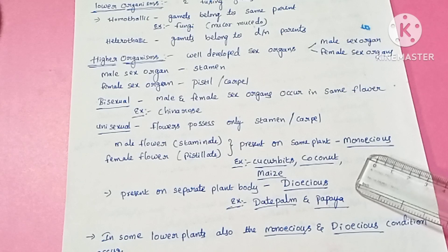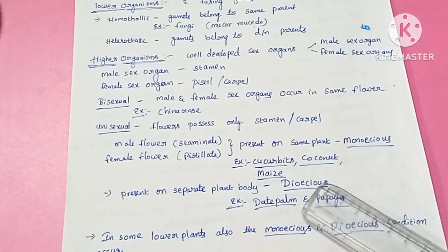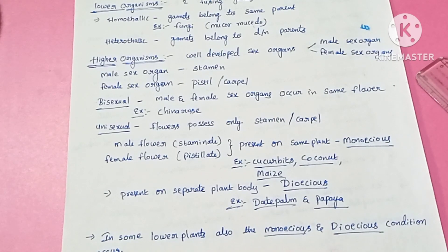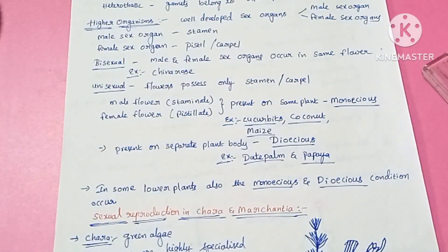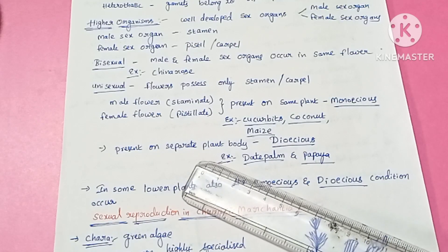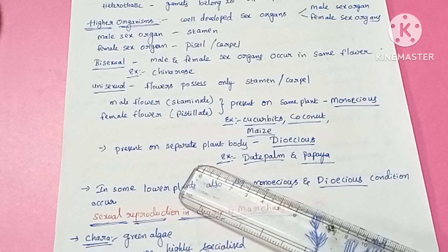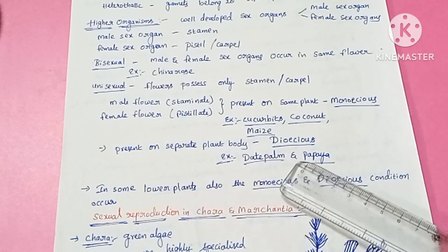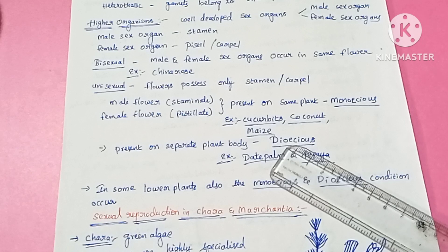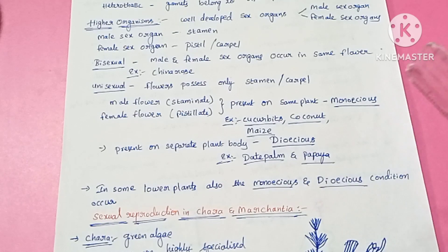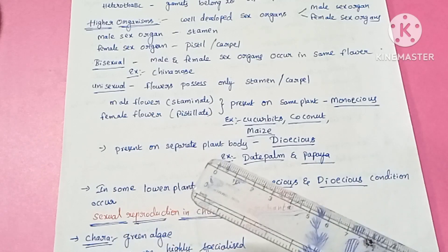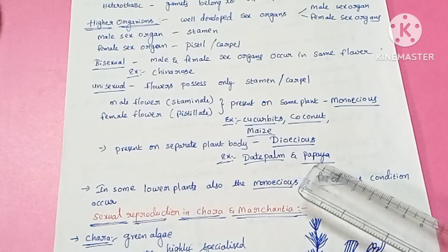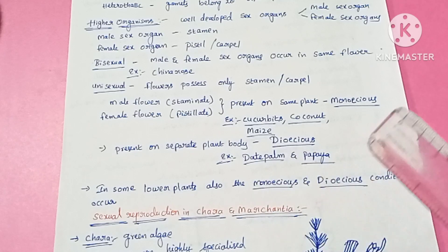In the monoecious condition, male flowers and female flowers are separated but present on the same plant. Examples of monoecious plants are cucurbits, coconut, and maize. If male and female flowers are present on separate plant bodies, then those plants are called dioecious. Examples of the dioecious condition are date palm and papaya, where male plants and female plants are separate.